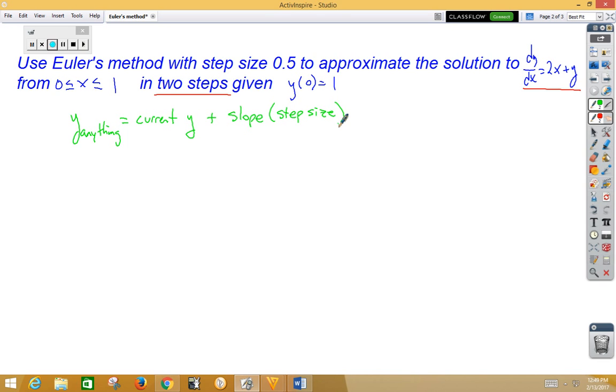Now if that looks somewhat familiar, you might think of that when we were doing Taylor Maclaurin's, if we think of that as basically y sub 1 plus slope x. So it's the equation of a tangent line. Or you could think of it as y equals mx plus b.